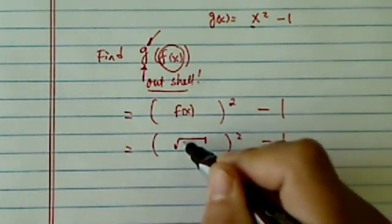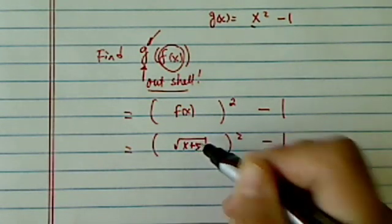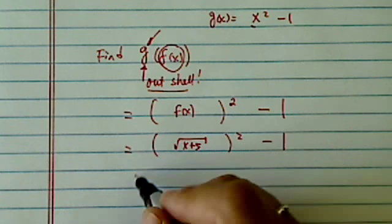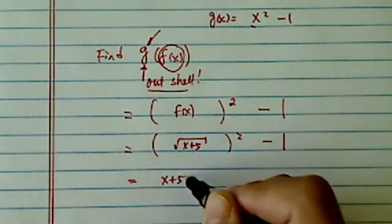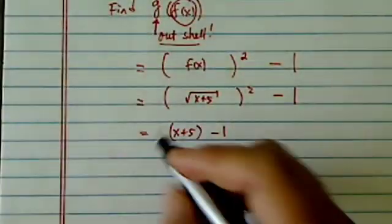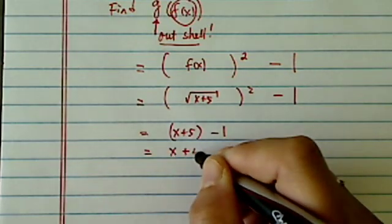f of x equals root x plus 5, so we have root x plus 5 squared minus 1. We're going to simplify it as x plus 5 minus 1, which equals x plus 4.